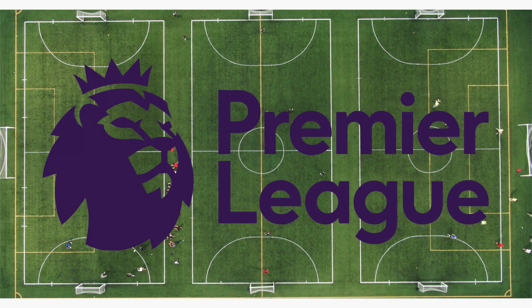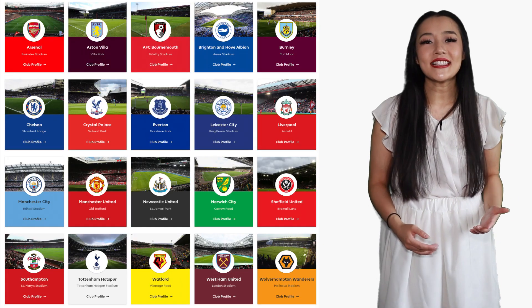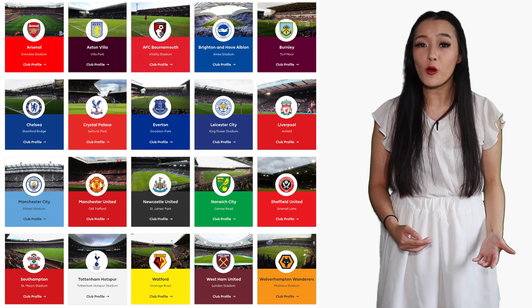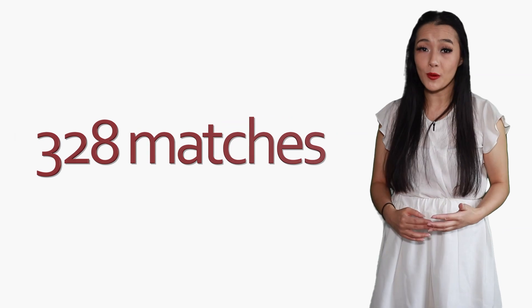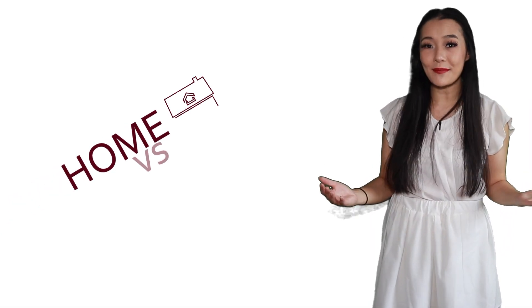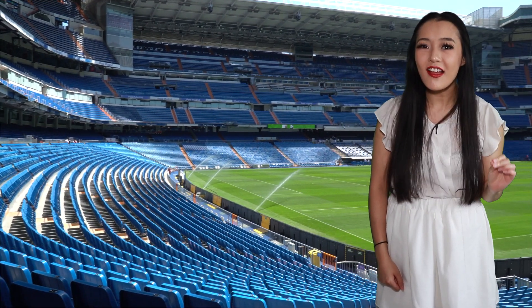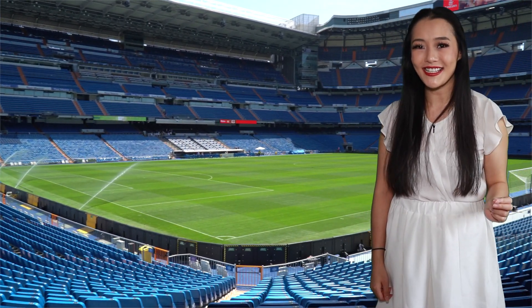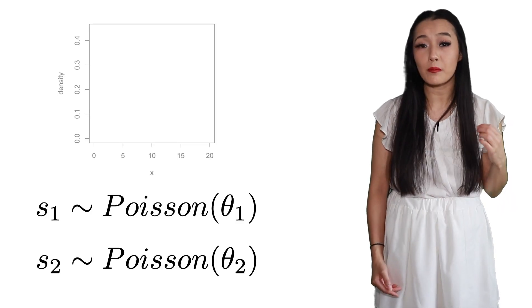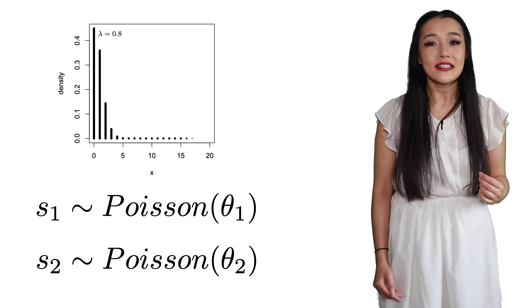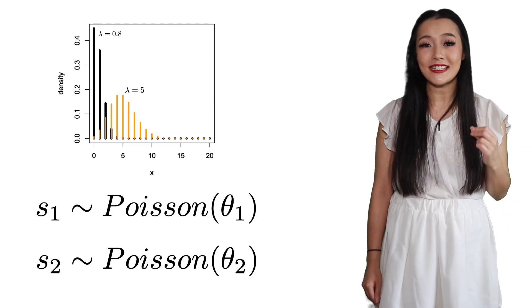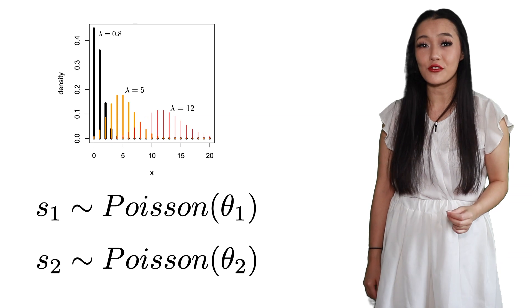As an example, we are going to be looking at the Premier League season 19-20 football matches. The data consists of 20 teams and the goals scored over 328 matches. Each match has a home team and an away team, where a team playing in their home stadium will be at a slight advantage over the guest team. The number of goals scored by each team is assumed to follow a Poisson distribution, since the number of goals is a discrete probability distribution.